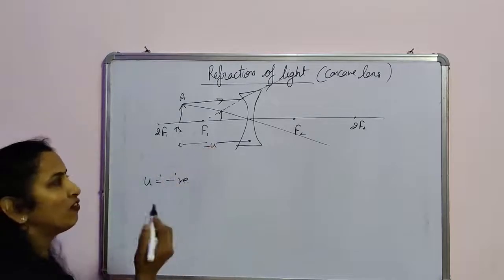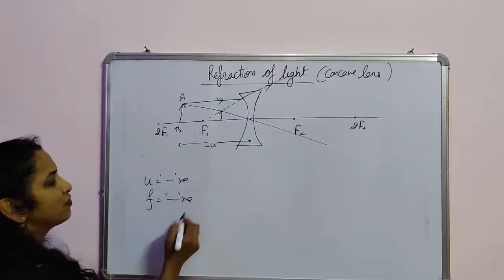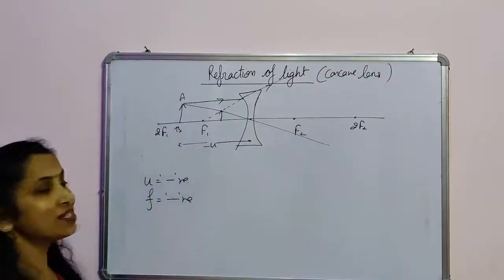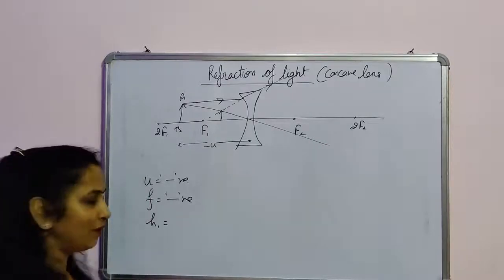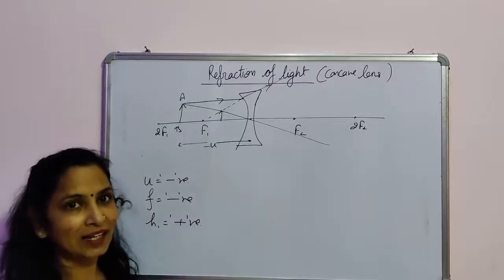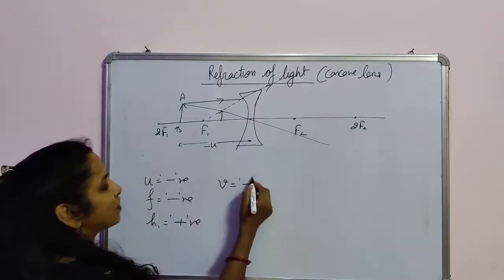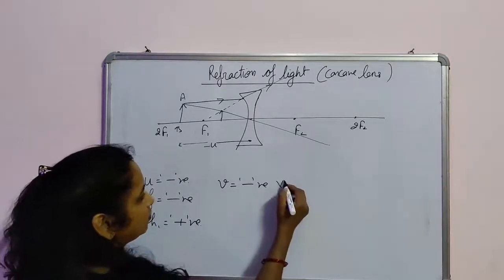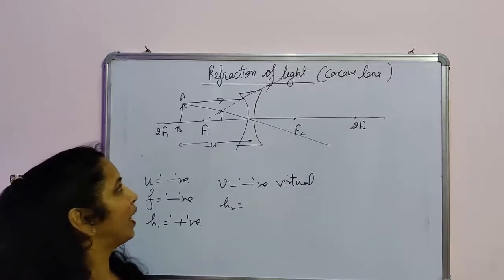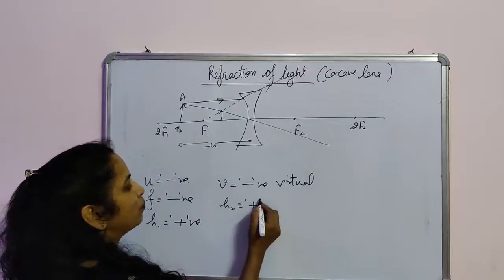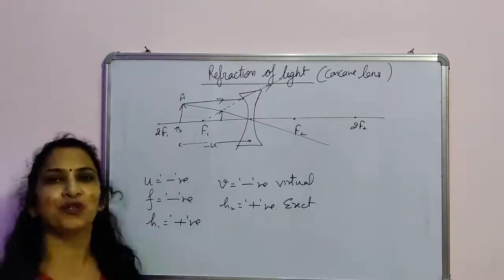The focal length — we always use the focus on this side in a concave lens, so the focal length F is negative, since we measure the distance of the focus to the left of the optical centre. H1 is always positive because the object is always erect. The image formed is always virtual and erect, so V will always be negative — the negative sign shows the image is virtual. H2 will be positive, meaning the image is erect. These are the sign conventions for the concave lens, and they are fixed; they do not change under any condition.